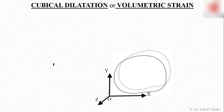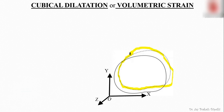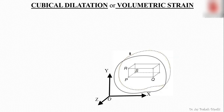For calculating cubical dilatation, we will again consider a very small region and then consider a deformed region. But instead of a line or rectangle, we will consider a volumetric element in the neighborhood of a point. We will take this volumetric element in the shape of a parallelepiped.